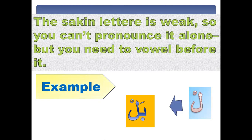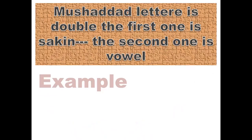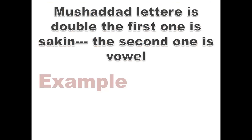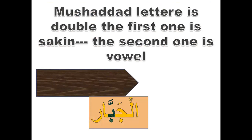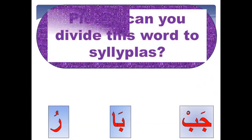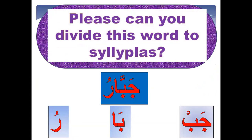The third type is the mushadad letter — Al-harf al-mushadad. This letter is double: the first one is sakin and the second one is vowel. For example, in the word 'Al-Jabbar,' the letter 'ba' is a mushadad letter — it is a double 'ba': one with sukun and one with fatha. Please, can you divide this word into syllables? Al-Jab-bar — three syllables.